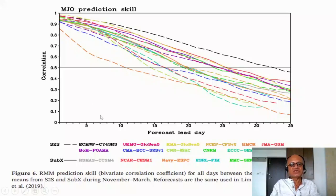Here is the MJO prediction skill from various models and 0.5, that is correlation between RMM prediction skills. It is a bivariate correlation coefficient for all days between the observation and ensemble means from S2S, sub-seasonal to seasonal, and another group called sub-X during November to March. Re-forecasts are the same used in LIM.